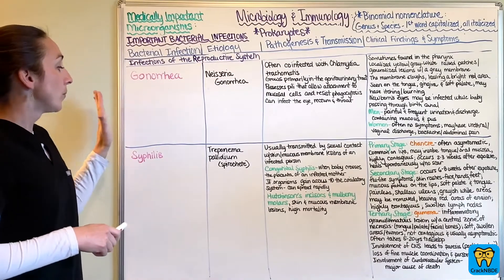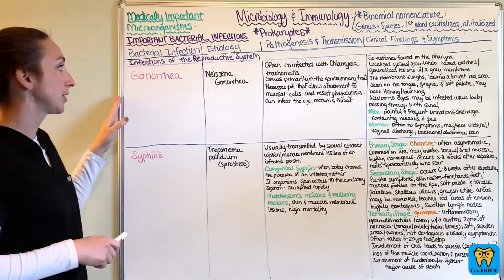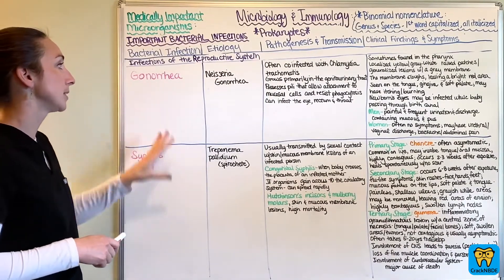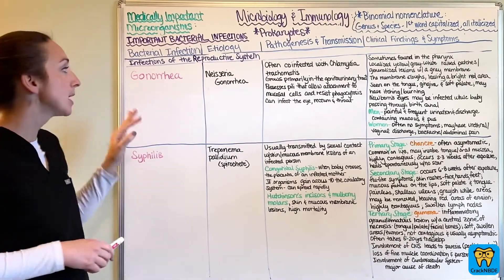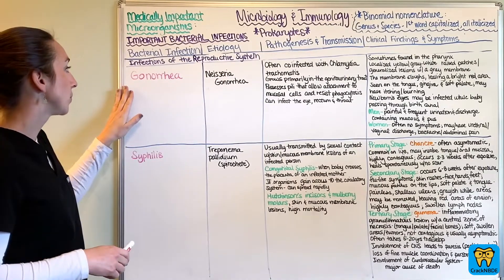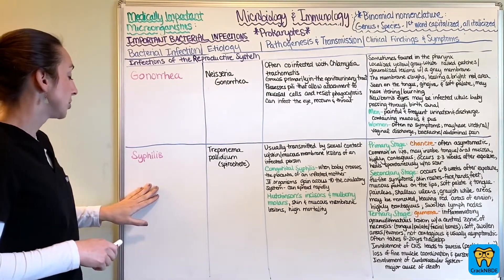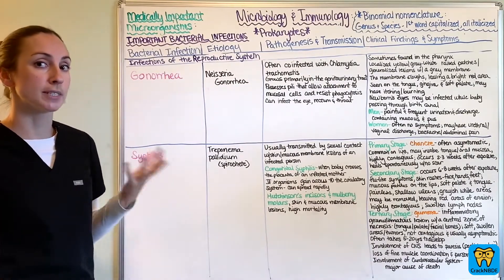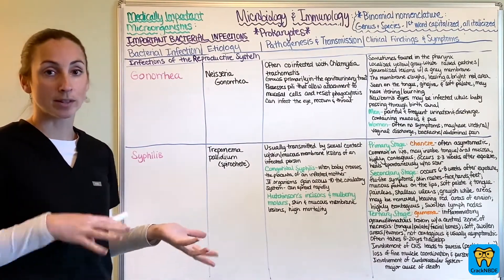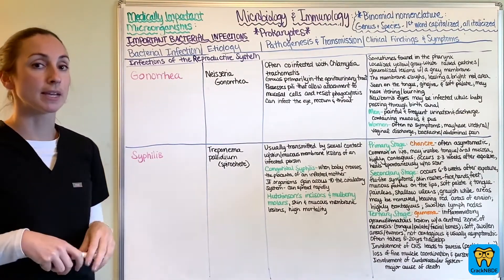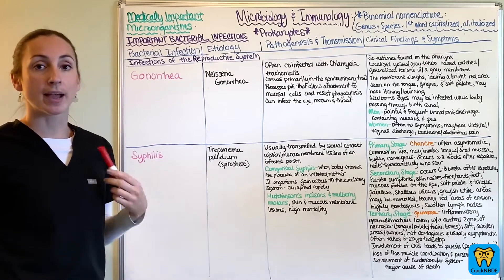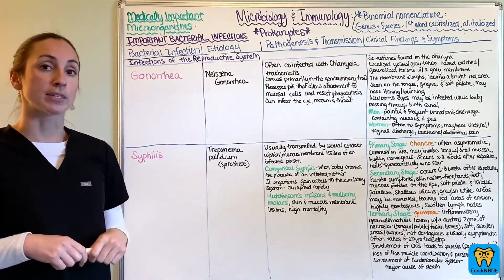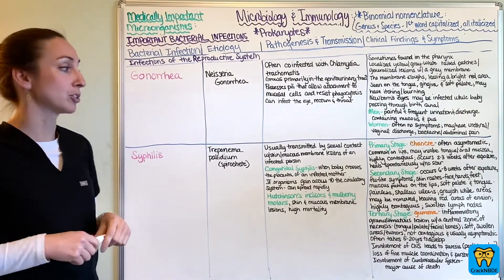We have two major bacterial infections to discuss regarding the reproductive system: number one is gonorrhea, and number two is syphilis. These may have oral presentations as well, so this is something you should be familiar with as a clinician. You may see some questions about this on your national board.